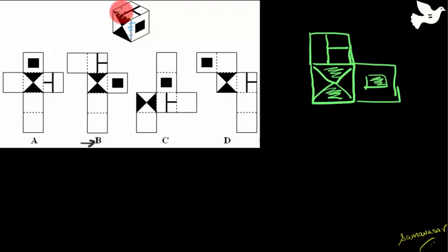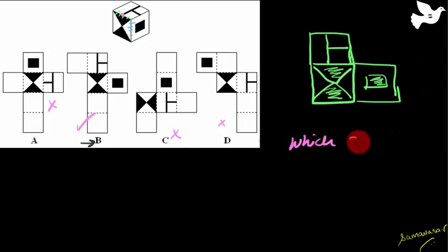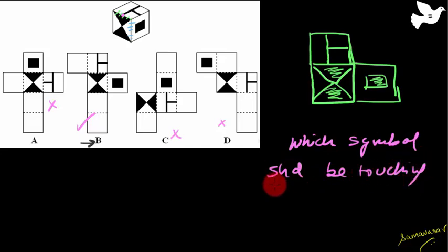Another thing you can check, especially when two symbols are touching each other: this T edge is touching this triangle. So when you open it, this triangle should also touch this T. In the first option, T is not touching any triangle — ruled out. The second is obviously the right answer. The third: T not touching triangle — ruled out. The fourth: T not touching triangle — ruled out. So you can either open it out or check which symbols should be touching each other.